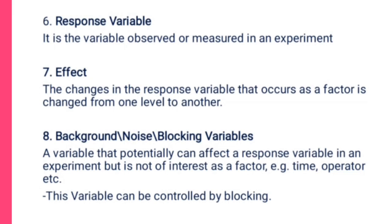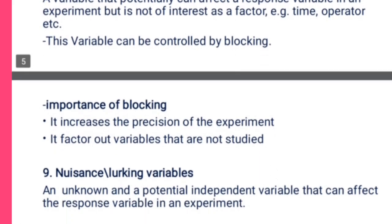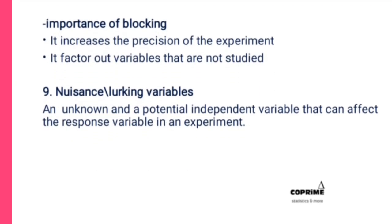When you introduce blocks in an experiment, it increases the precision of the experiment — how accurate the result is — and it factors out variables that are not being studied. Blocking variables are variables you know can affect the outcome of the experiment but are not of interest to study, so you factor them out.